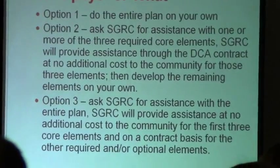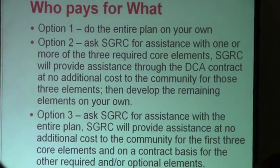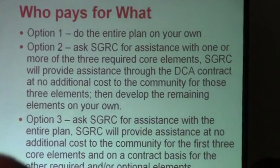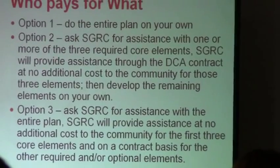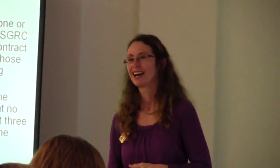Those three core elements are the community goals, the needs and opportunities, and the community workable program — also known as the short-term work program. The other required elements, which were transportation, land use, housing, and economic development, we are not required to do those for you at no cost.